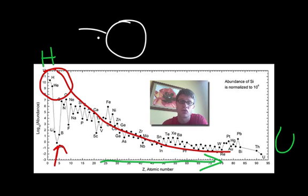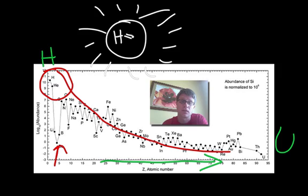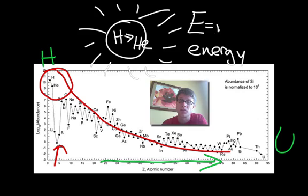You might be thinking, I wonder why that is. Well, the sun actually gets its energy from hydrogen fusing into something called helium, and that gives off a huge amount of energy. If you've heard of this before: E equals mc squared.